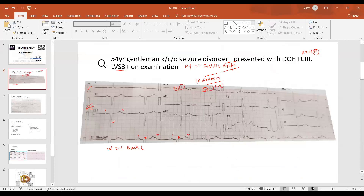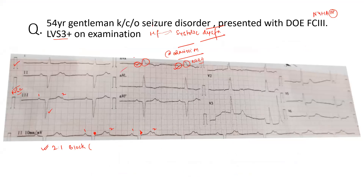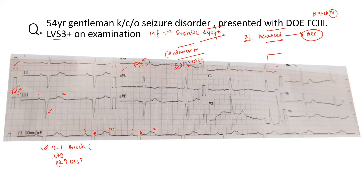There is 2:1 AV conduction. Whenever there is a 2:1 AV block, it is some sort of advanced degree of block because for every two P waves, only one is being conducted. We have to look at the QRS, whether it is narrow or wide. This will tell us if the block is at the supra-hissian or infra-hissian level. Any block at the infra-hissian level is a severe conduction defect and will require emergency permanent pacemaker insertion.